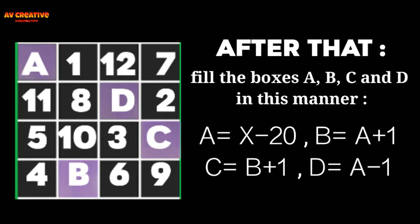After that, fill the boxes A, B, C, and D in this manner: A equals X minus 20, where X is the number given by your friend. B equals A plus 1, C equals B plus 1, D equals A minus 1.